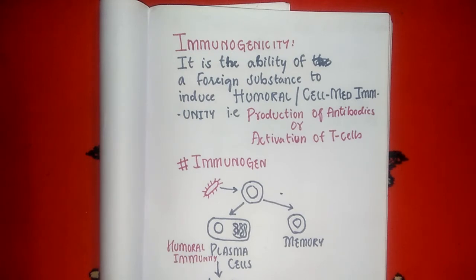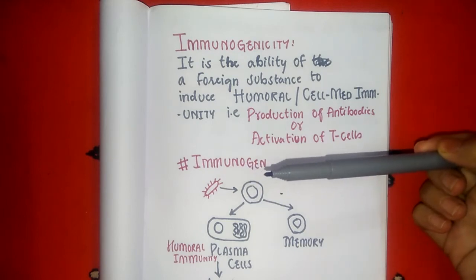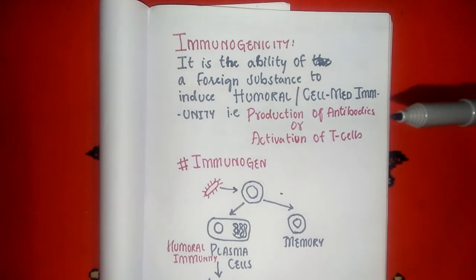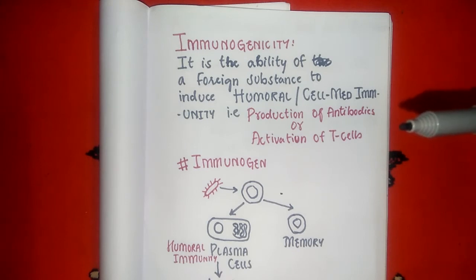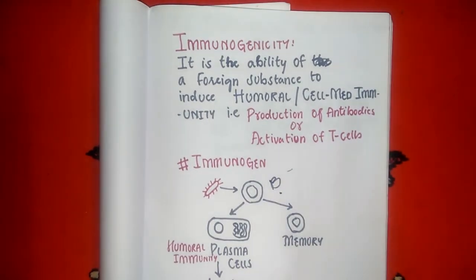Let's learn it through a diagrammatic representation. Take an example of a bacteria. This bacteria, on entering your body, as we know from physiology, may activate the humoral immunity or cell-mediated immunity. First, take an example of humoral immunity: the substance enters the body and activates the B cells.